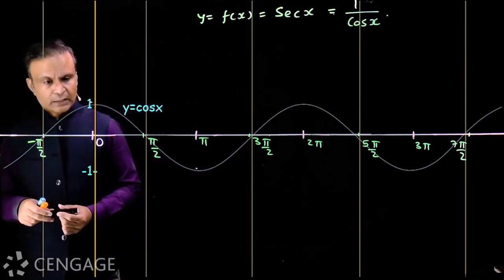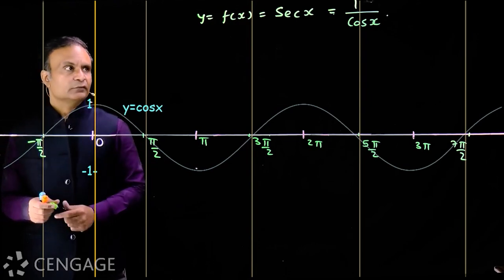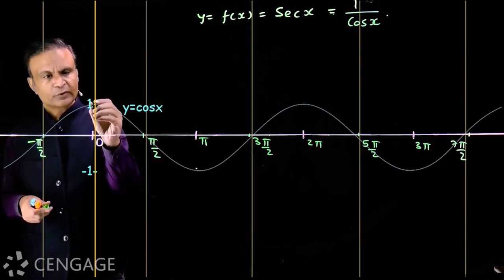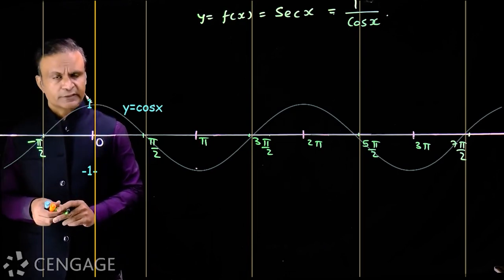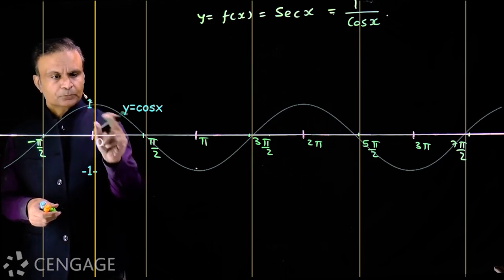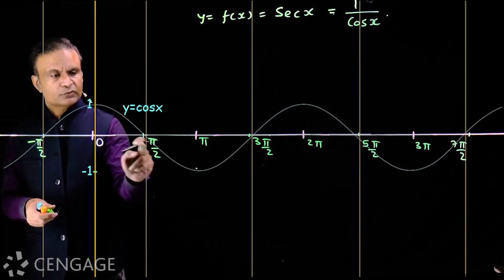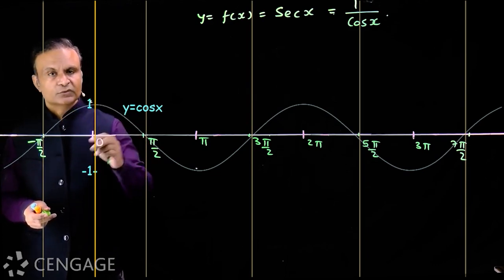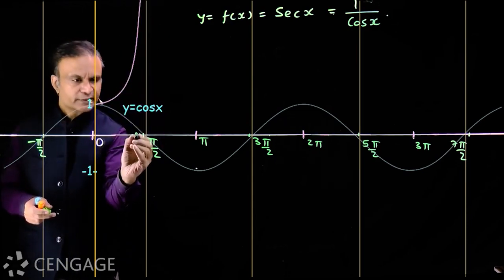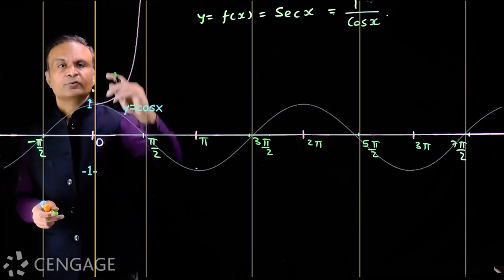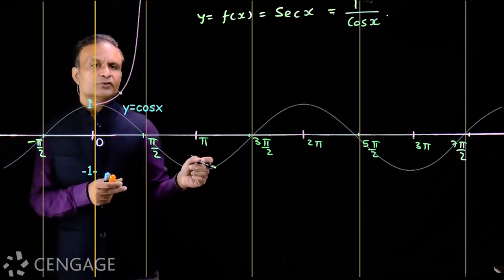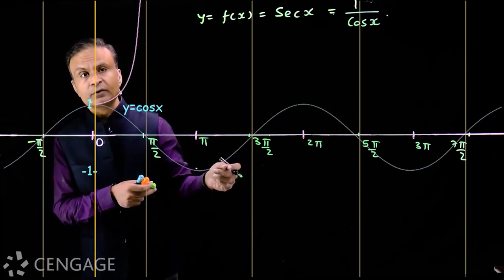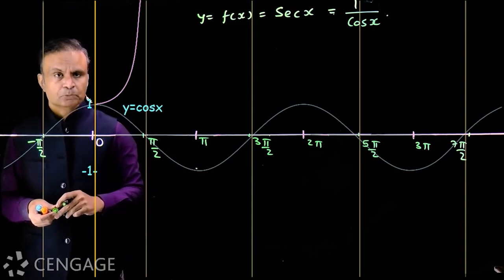cos(0) = 1, so sec(0) = 1 as well, giving us a point on the graph of sec(x). In the first quadrant, x ∈ (0, π/2), cos(x) decreases, so sec(x) increases. The graph rises such that as x tends to π/2 from the left, sec(x) approaches positive infinity.